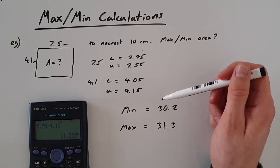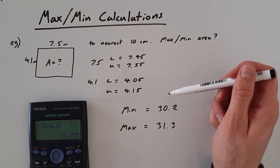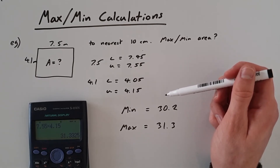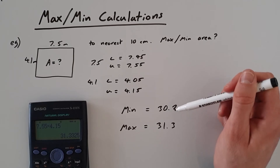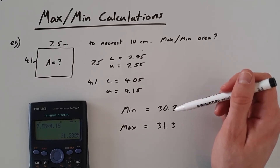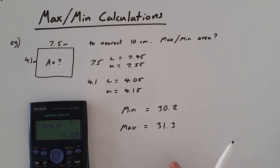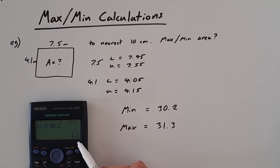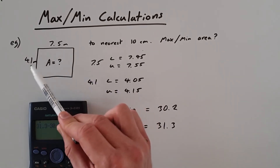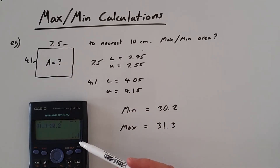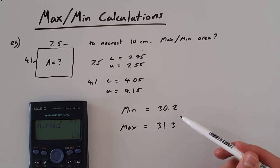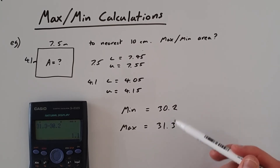Also, at the start of this video I referenced the error margin. What that basically is is the range that your answer could fall into — your margin of error. In our case it's the difference between our maximum and minimum possible values. If we take those away from each other — 31.3 minus 30.2 — our margin of error is 1.1. The actual answer could be anywhere between 30.2 and 31.3, anywhere in that space of 1.1.